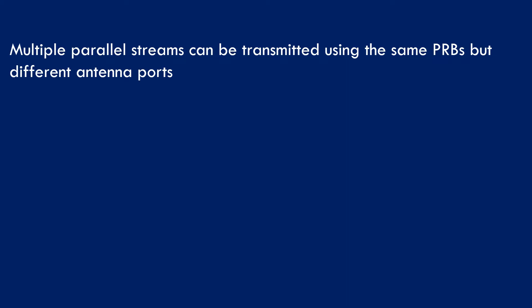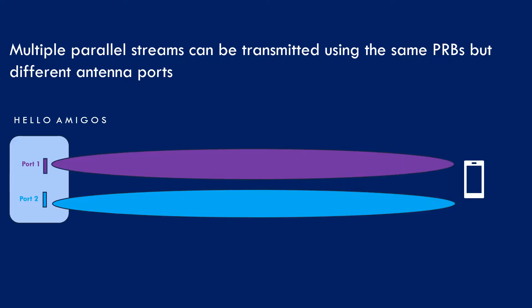There is another use of logical antenna ports where we can benefit from sending data over different ports. We can send a message like 'hello amigos' using the same set of PRBs (time and frequency resources) but using different antenna ports. Different antenna ports mean different data streams, so we are able to send double the data using a double stream. There can be more streams depending on the number of antenna ports used.